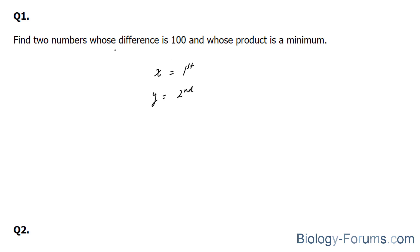And they're saying their difference is 100, which means that if I were to take the difference of x minus y, it would give us 100. And it's also telling us that their product is a minimum. So if I were to multiply x times y, I would end up with a product.